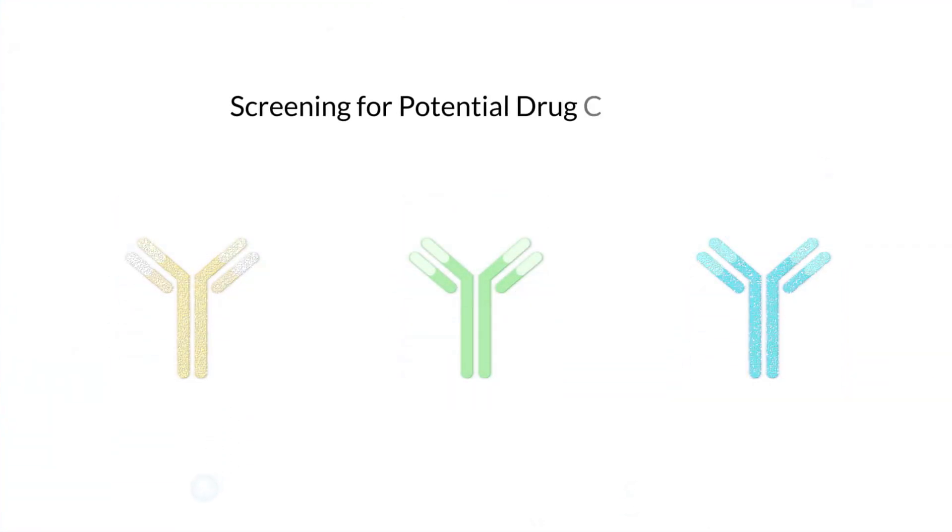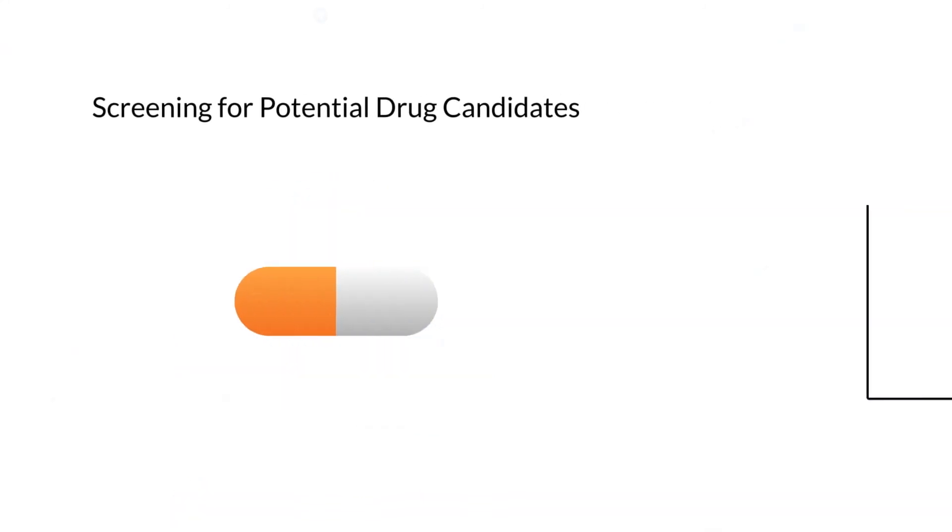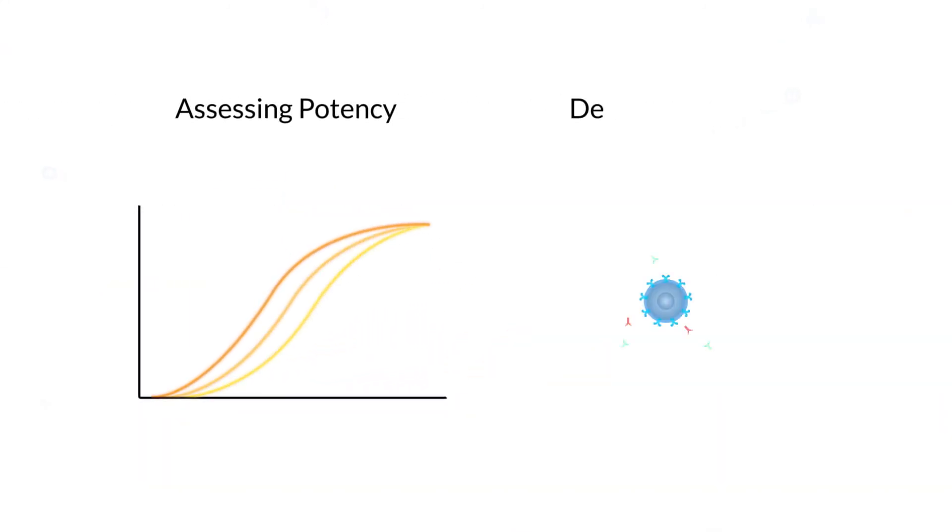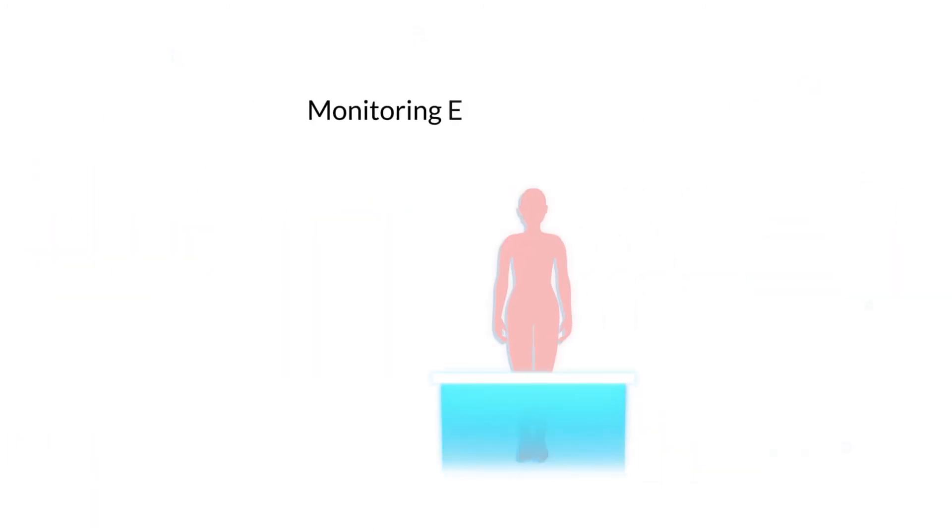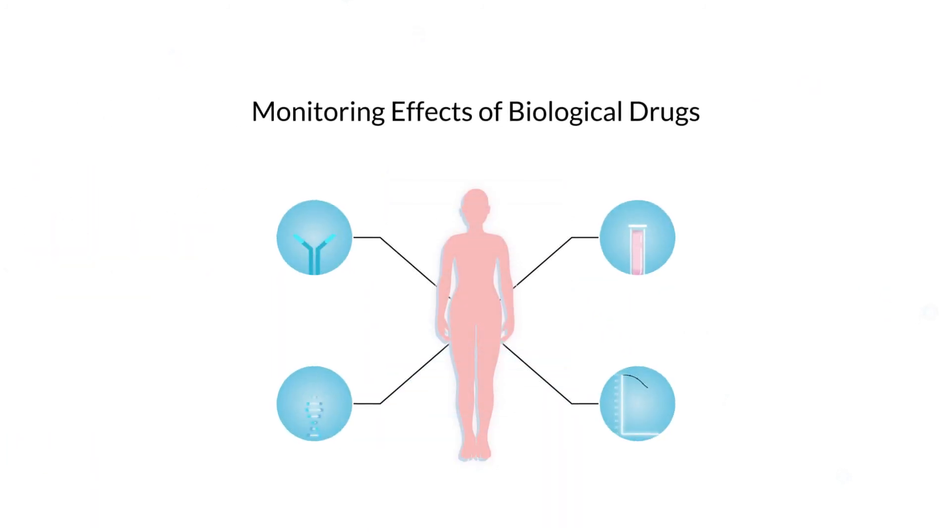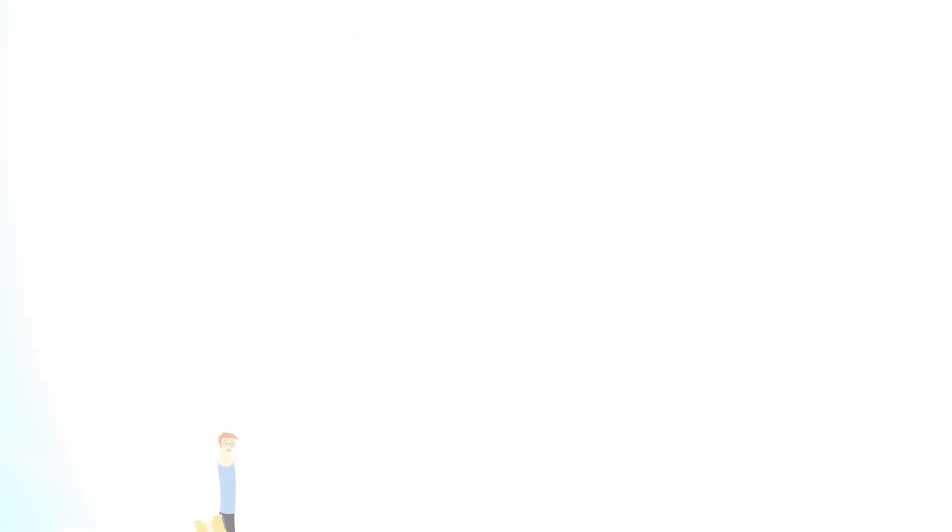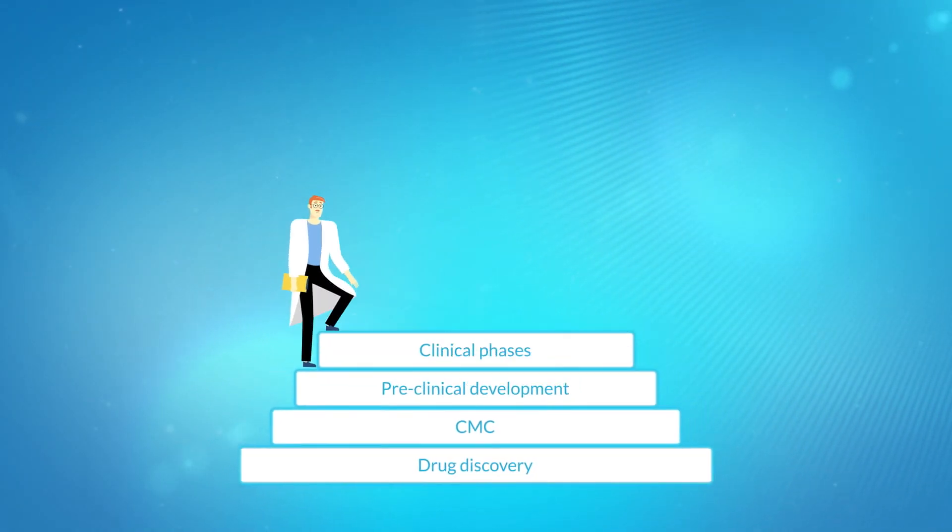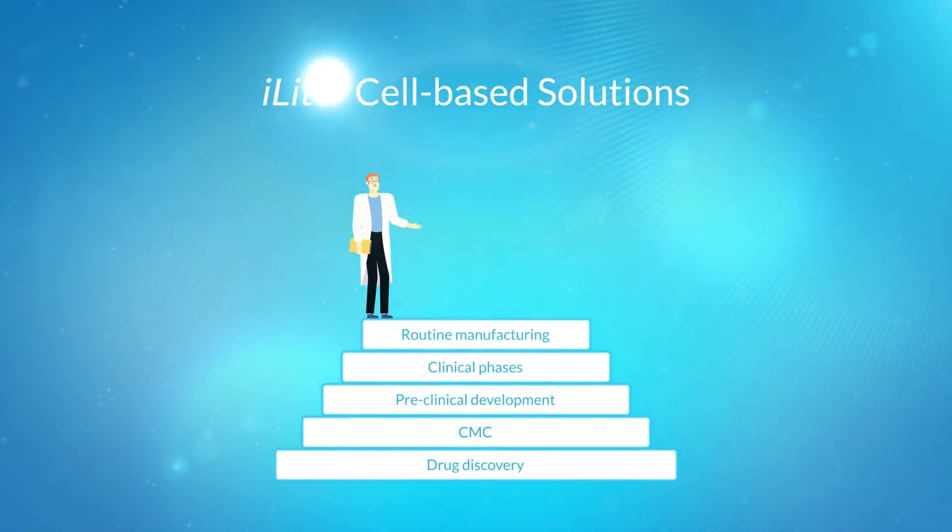The iLite technology can be used successfully throughout the drug development continuum, in screening for potential drug candidates, when assessing potency or detecting NAbs, and when monitoring effect of biological drugs. With iLite, the same platform can be used in every step and help bring light to your drug development process.